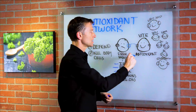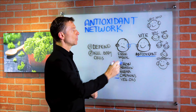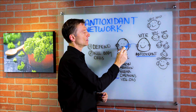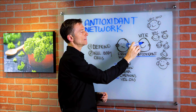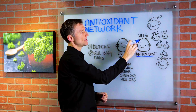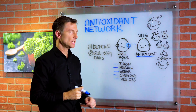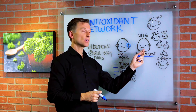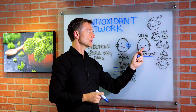An antioxidant donates — gives up — one of its electrons to make a free radical stable. The problem is when vitamin E, for example, gives up this electron, it becomes unstable itself. It becomes a free radical, but not as severe, though it still becomes unstable.